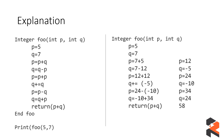The answer is 58. p and q are passed as 5 and 7. p = p + q = 5 + 7 = 12. Next, q = q - p = 7 - 12 = -5 (using the updated value of p, which is 12, not 5). Then p = p + p = 12 + 12 = 24.